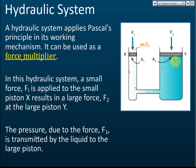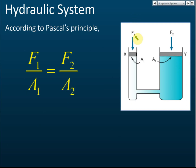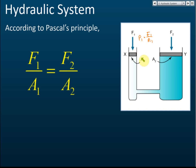Let's say the force applied to the small piston is F1 and its area is A1. Therefore the pressure at the small piston is P1 = F1/A1, because pressure equals force over area. The pressure at the large piston is P2 = F2/A2.